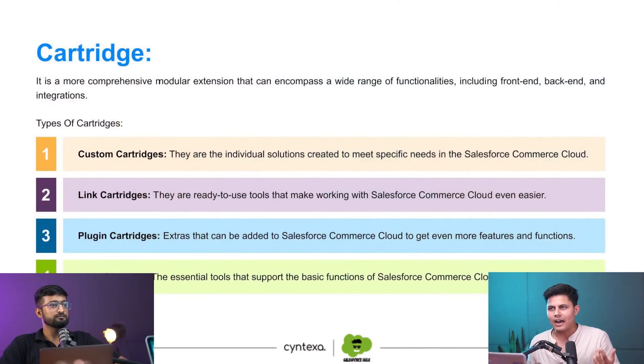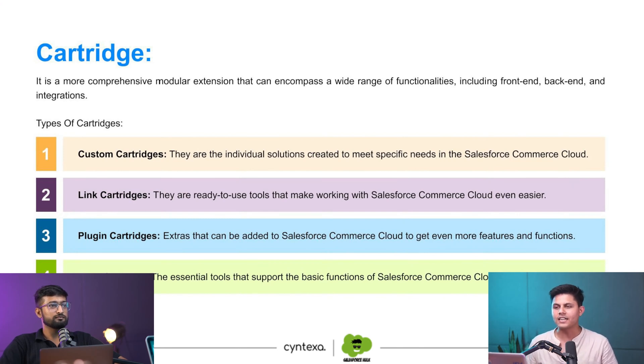Then come plugin cartridges. There is a difference between link cartridges and plugin cartridges. A link cartridge would be an integration — for example, integrating PayPal, where PayPal's link cartridge would be used. Plugin cartridges, on the other hand, are for things like plugin wishlist and plugin compare — product comparison and wishlist functionalities. These are not calling a third-party application; they're just extending the functionality of Commerce Cloud or SFRA. Those are plugin cartridges.